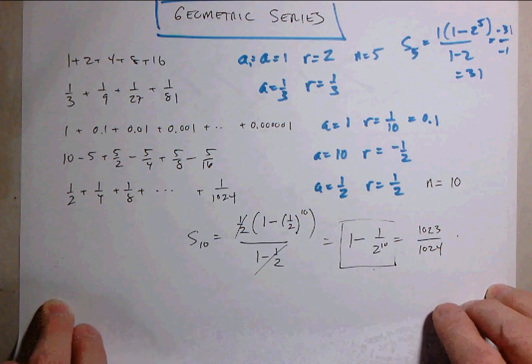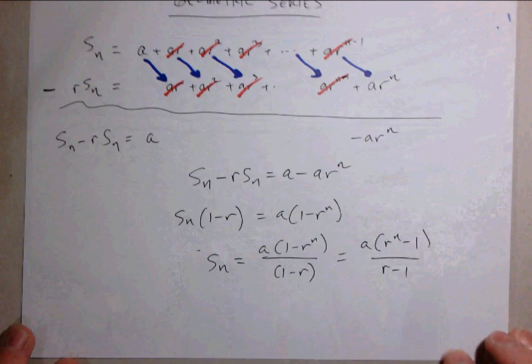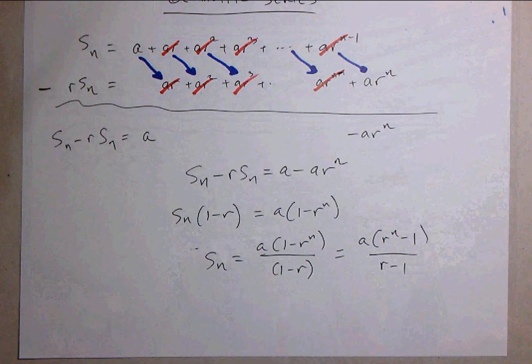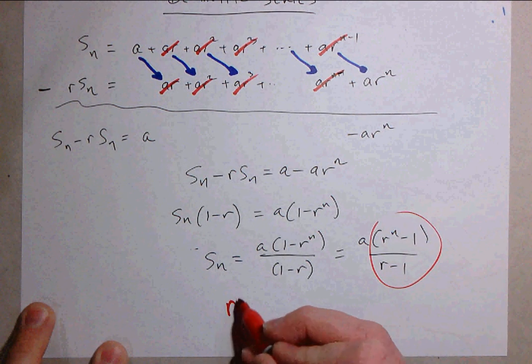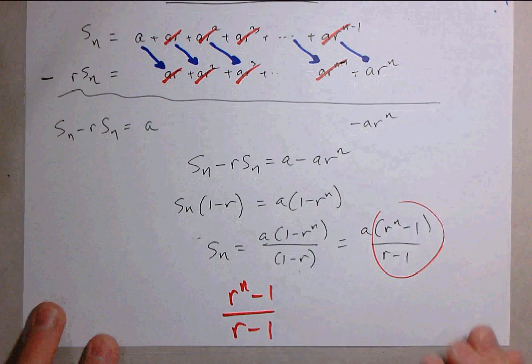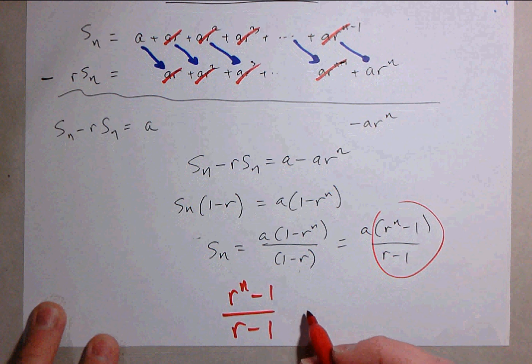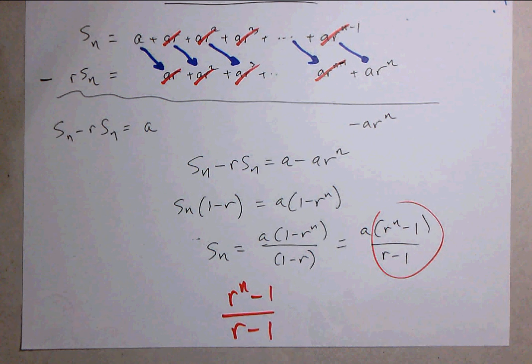So this is an introduction to this really beautiful formula for the sum of a geometric series. One thing I would encourage you to look at is this quantity right here, r to the n minus 1 over r minus 1. You can evaluate this using polynomial long division, and I encourage you to do so because the result is quite stunning.